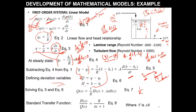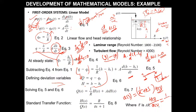The equation in deviation variables becomes: capital Q minus (1/R)·capital H equals A·d(capital H)/dt. Taking the Laplace transform, H(s)/Q(s) gives one over (1/R + As). Rearranging, R goes to the numerator and the transfer function becomes H(s)/Q(s) equals R divided by (τs + 1), where τ equals A·R.